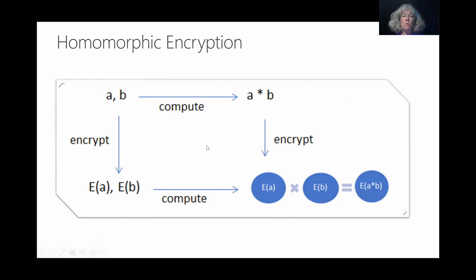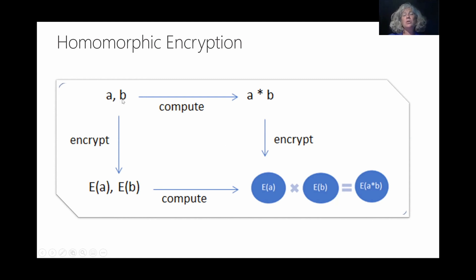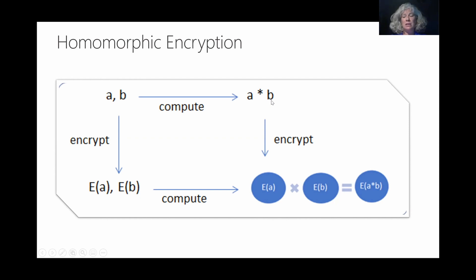That's the idea of homomorphic encryption — it allows you to outsource computation on your valuable, sensitive, private data while still keeping the key yourself, keeping it in a locked box. Homomorphic encryption allows you to interchange the order of computing and encryption and still get the same outcome. It's a mathematical term and mathematicians love commutative diagrams. If you have some data A and B, you can compute on it and then encrypt it, or you can encrypt it first and then compute on it, and the result should decrypt to the same value. This means you can take your private data A and B, encrypt it, send it to the cloud, let the cloud compute on it, send it back, and just decrypt the answer.